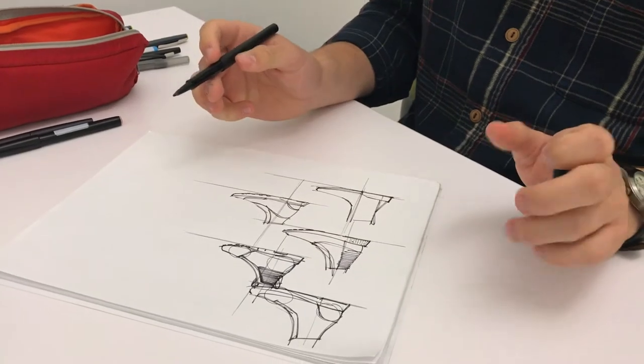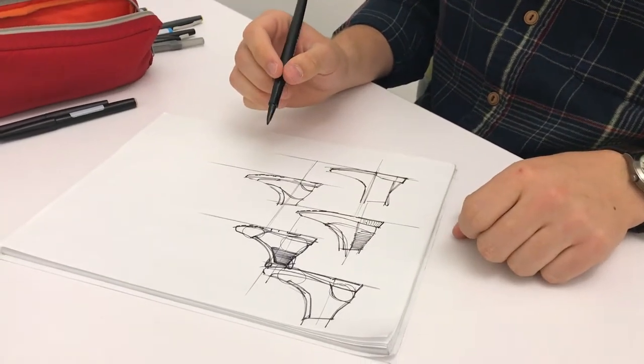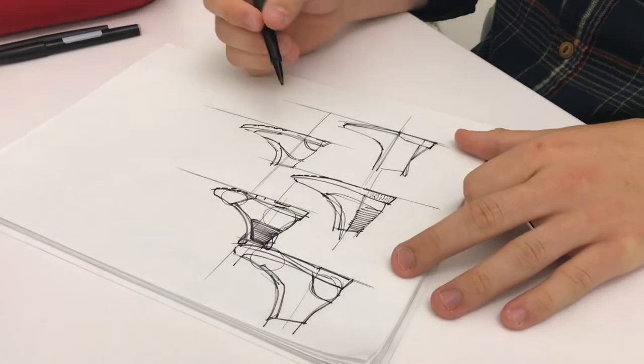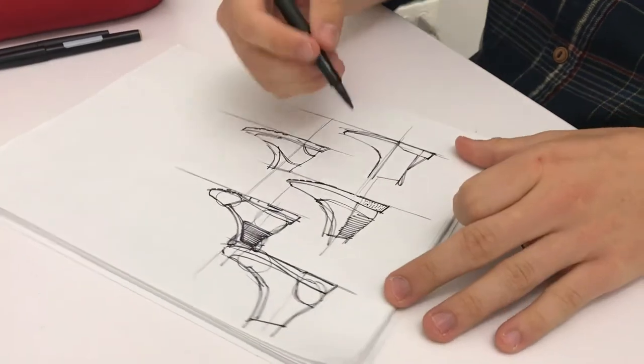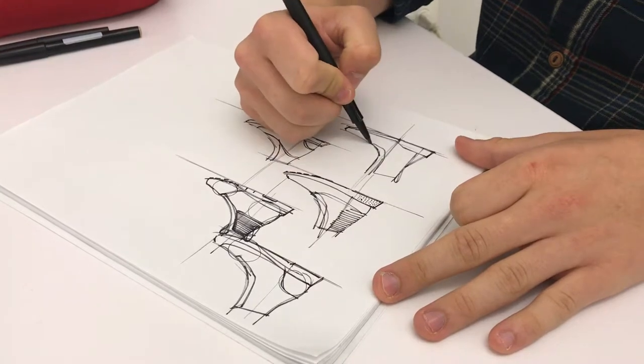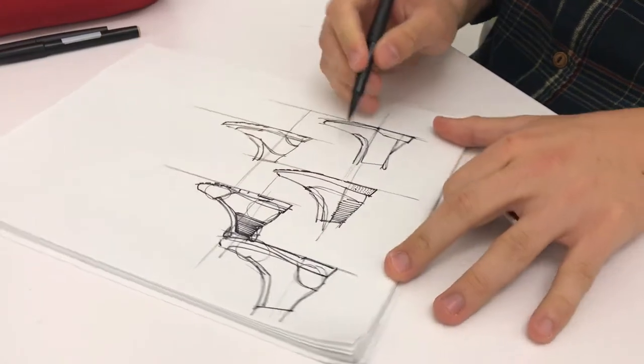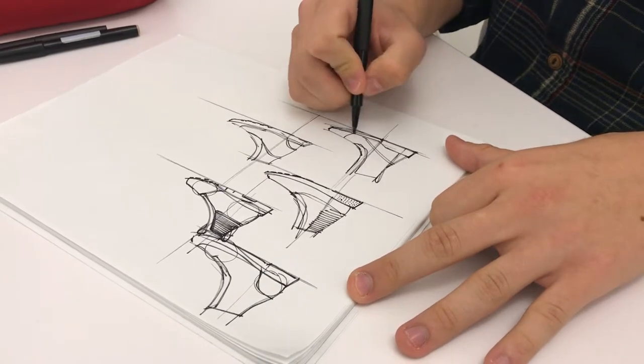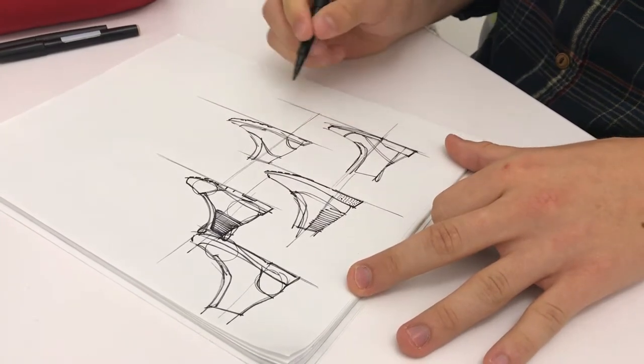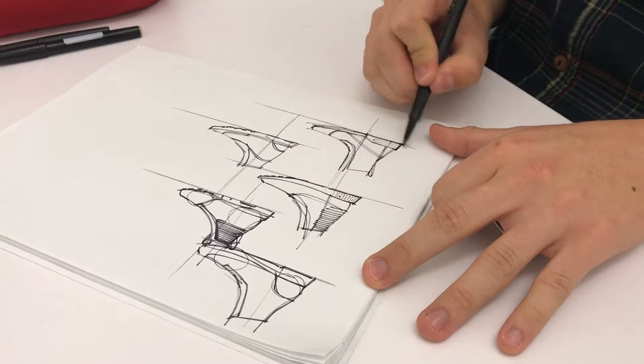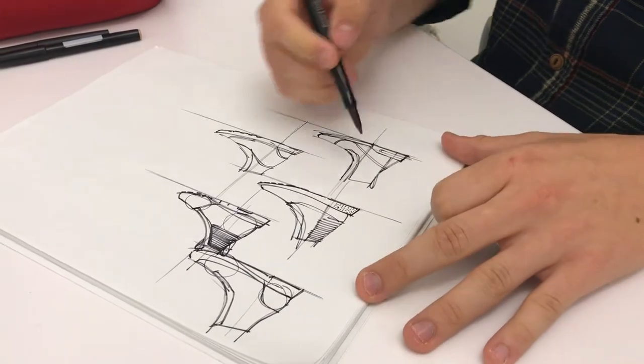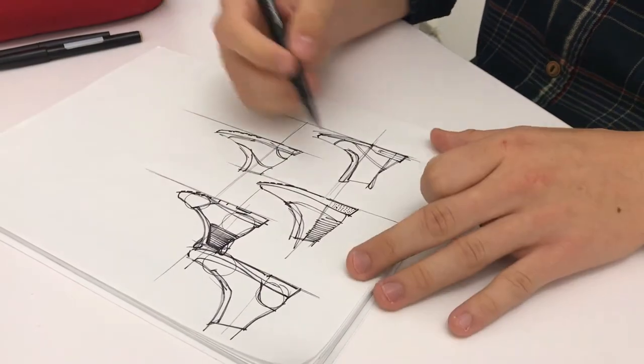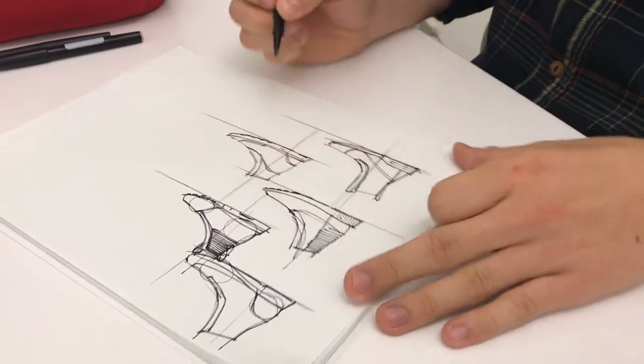The secret to sketching is finding things that you love to sketch. Because the real secret to sketching is practice. And no one likes to practice. So you have to find ways to make practicing fun. Find people that you want to copy. Find people whose sketches you think are cool. If you love shoes then you're going to enjoy sketching shoes more than you'll enjoy sketching flower pots.